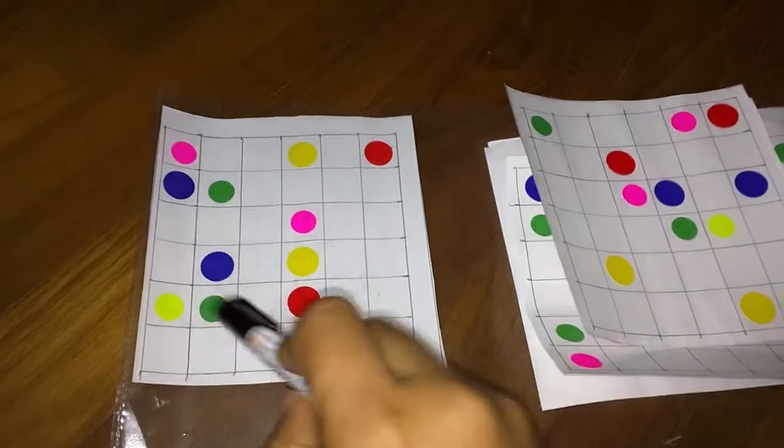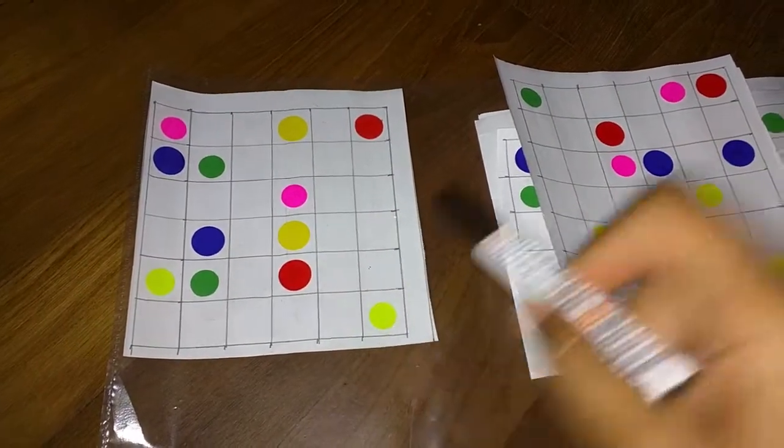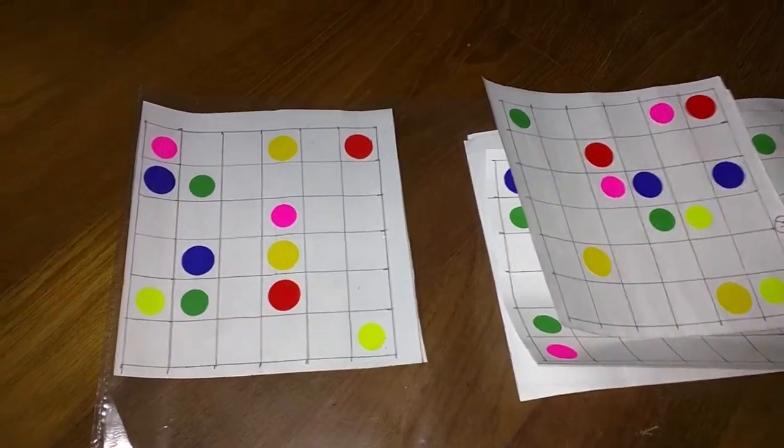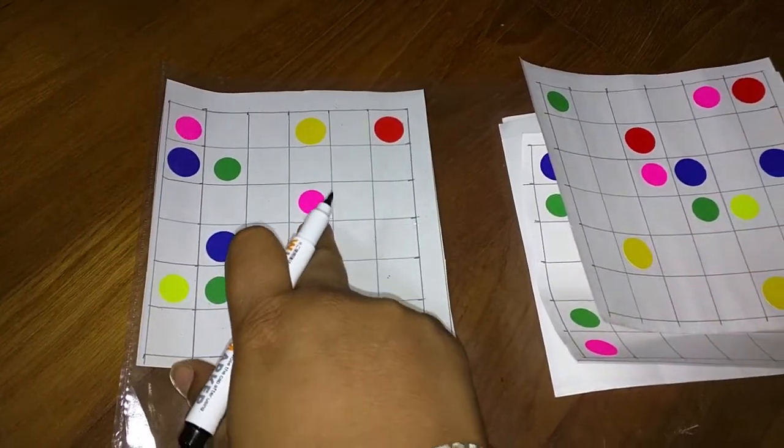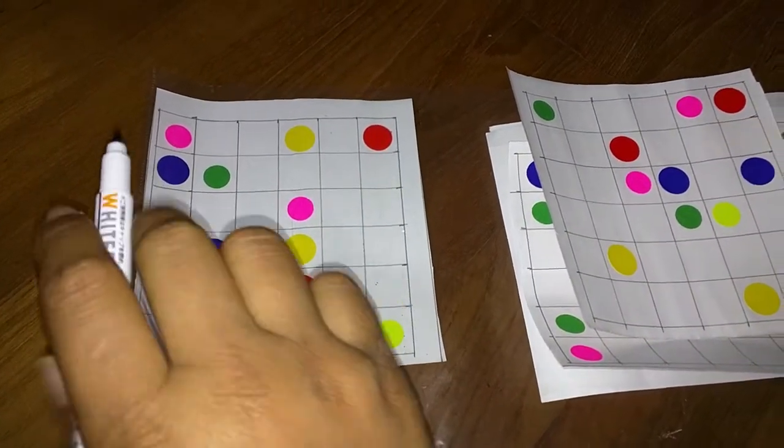What you have to do is I made six by six matrices. There are some five by five also, and what you have to do is you have to join the dots which are the same color, but there are two rules for it.